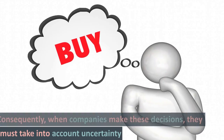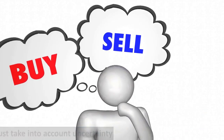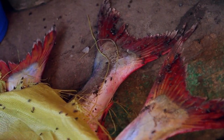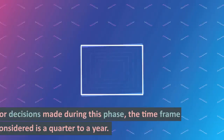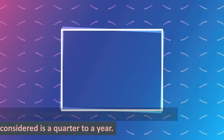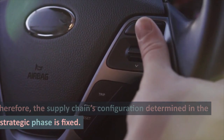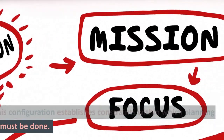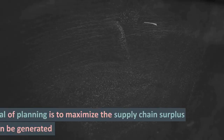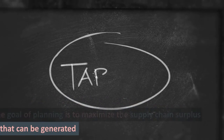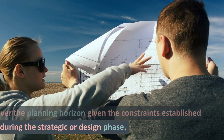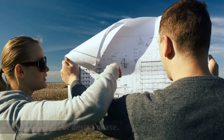Consequently, when companies make these decisions, they must take into account uncertainty in anticipated market conditions over the next few years. Supply chain planning — for decisions made during this phase, the time frame considered is a quarter to a year. Therefore, the supply chain's configuration determined in the strategic phase is fixed, establishing constraints within which planning must be done. The goal of planning is to maximize the supply chain surplus that can be generated over the planning horizon given the constraints established during the strategic or design phase.